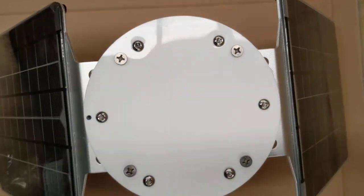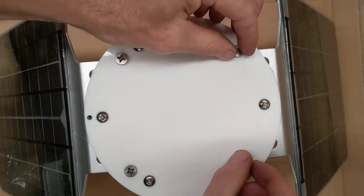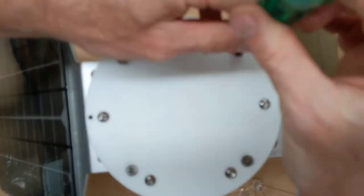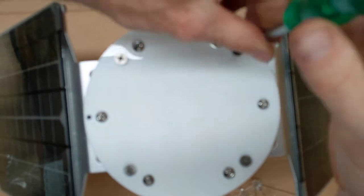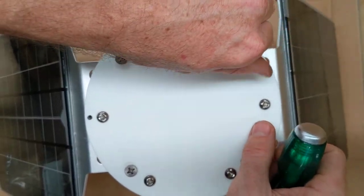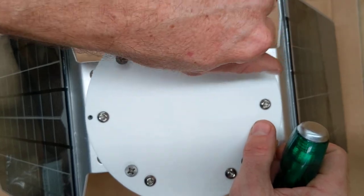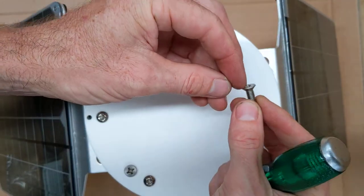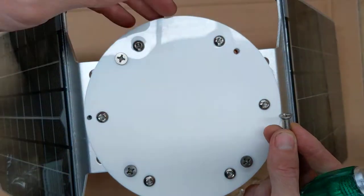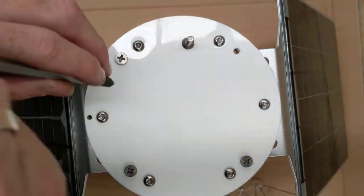So the screws that hold the bird spikes in position are already fitted, so you need to remove these from the AR-1 before commencing. If in doubt, they are the countersunk Phillips screwdrivers. So they are the countersunk ones, do not remove the other ones because they hold the canister inside the AR-1. So remove all four.